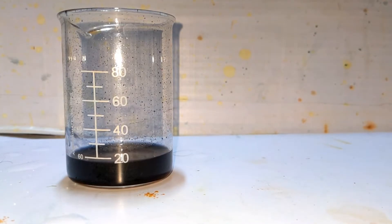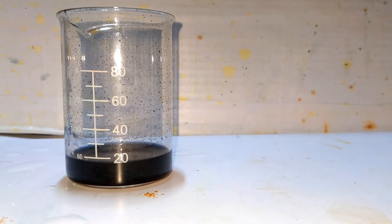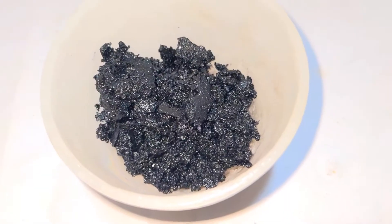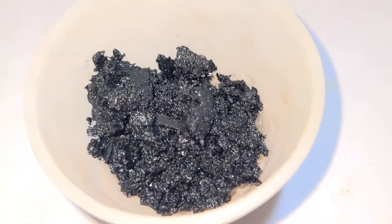Upon cooling, the crystals of potassium trisoxalatochromate(III) separate out as deep green to almost black colored shining crystals.